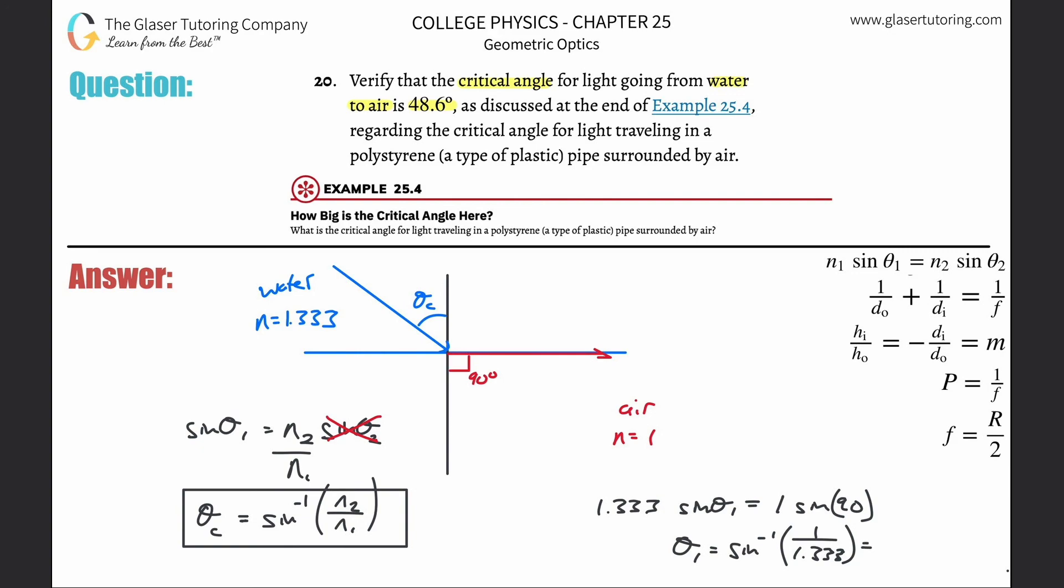Now, solving it over here is basically going to be that theta 1 will equal the inverse sine of 1 over 1.333. Let's do it in the calculator, make sure it's in degree mode. So 1 divided by 1.333, we get about 48.6 degrees, and that's what they said to verify. Well, we just verified it.